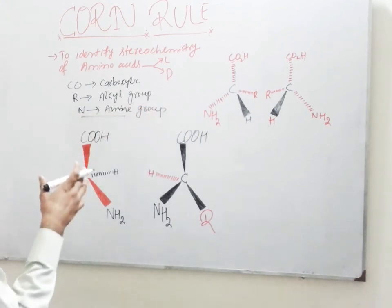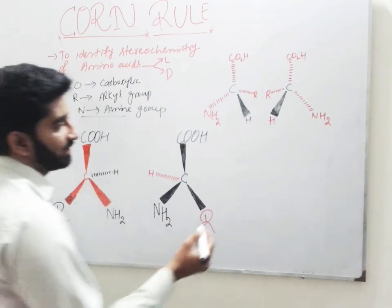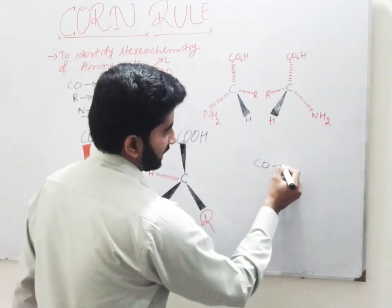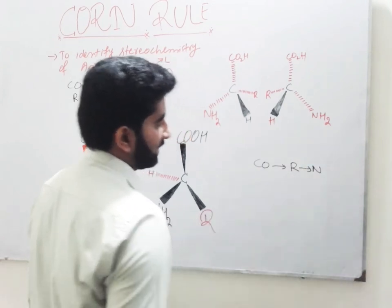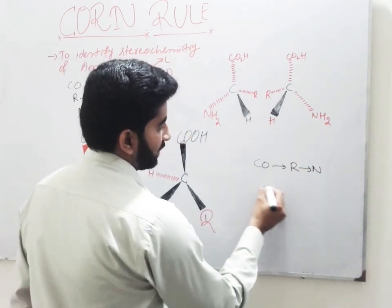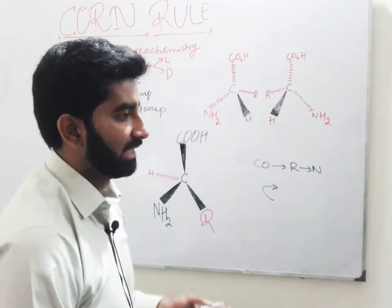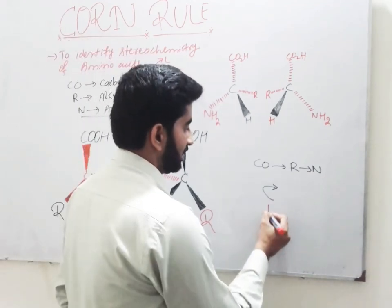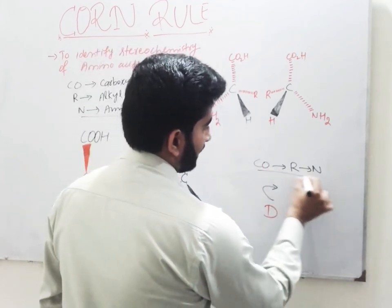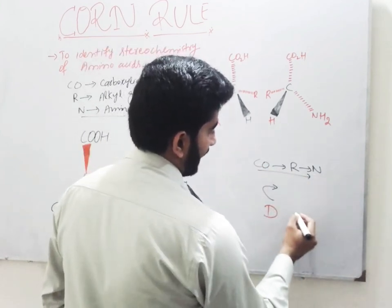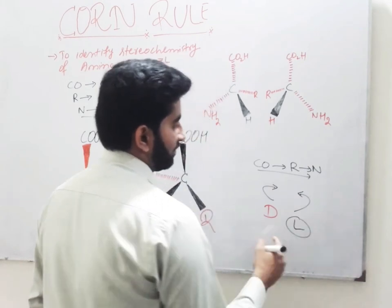So, this CON rule is used to identify the stereochemistry of amino acids. We do rotation in the direction of CON, and if the rotation is clockwise, then we assign it as D isomer. And if the rotation in the CON direction is anticlockwise, then we assign it as L isomer.